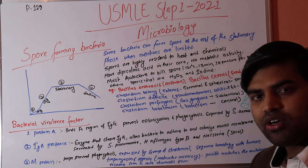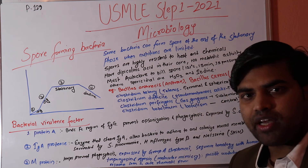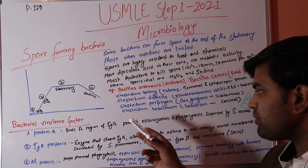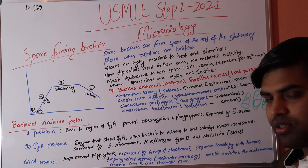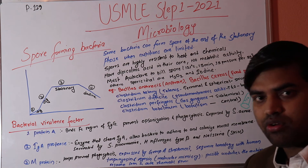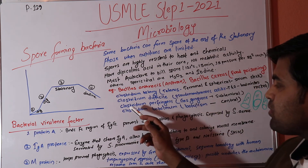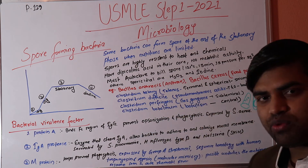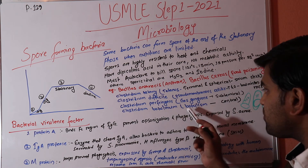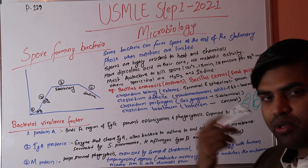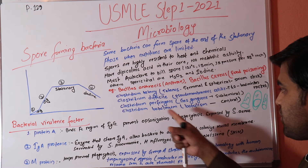Clostridium difficile causes antibiotic-associated diarrhea. When prolonged antibiotics kill normal flora, C. difficile survives, forms pseudomembranous colitis, and causes diarrhea — a hospital-acquired infection. C. difficile spores are not killed by normal chemicals; hydrogen peroxide or iodine is needed, or hand washing. Clostridium perfringens causes gas gangrene. Clostridium botulinum causes botulism; its toxin is so powerful it can cause paralysis, though in small amounts it is used cosmetically.